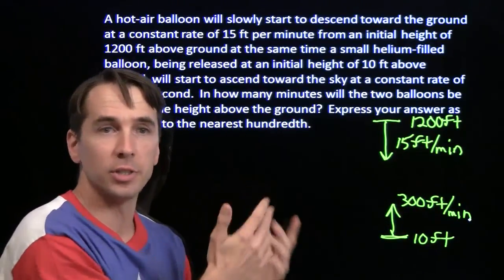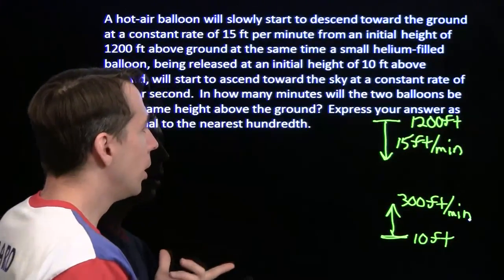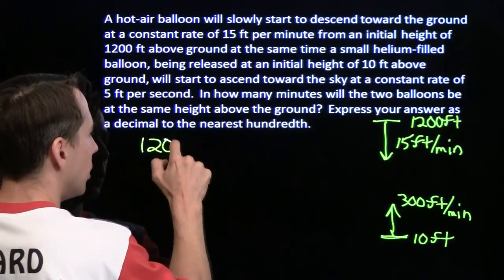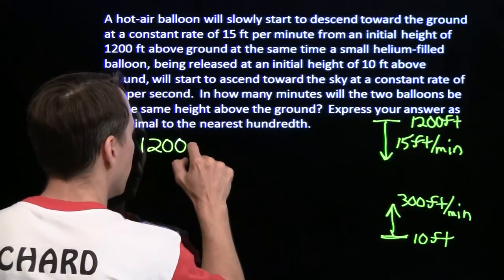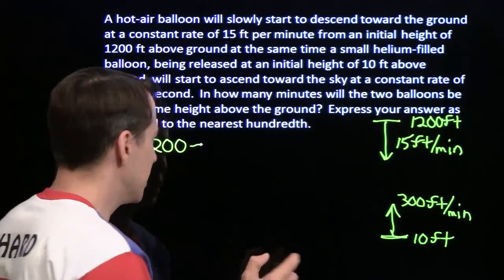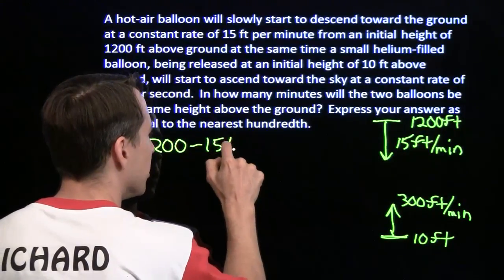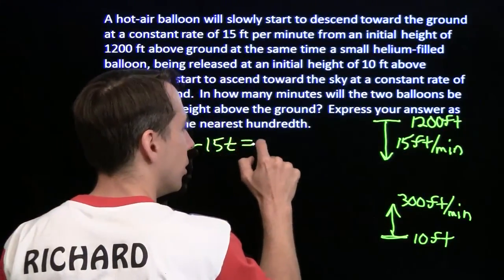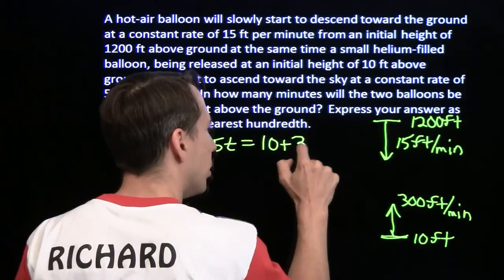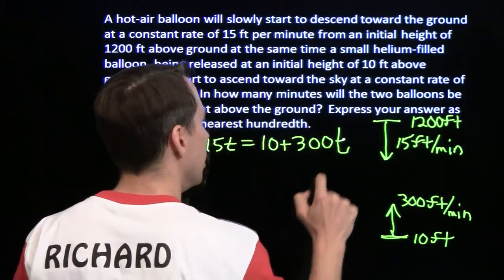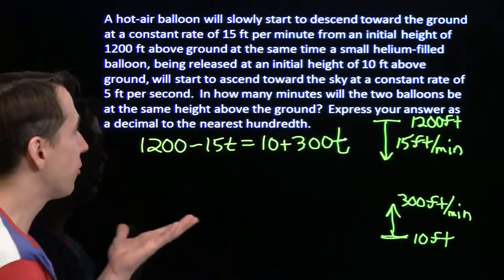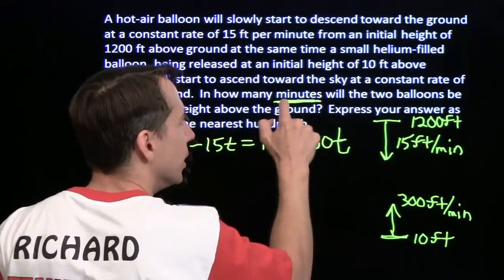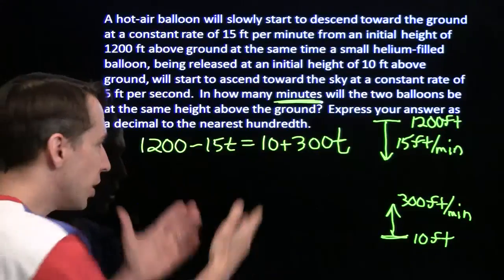We basically want to see when these two altitudes are the same. Well, we can break out some algebra just like we did in the first solution. We can write equations for where this balloon is. It starts at 1,200 and it's going downward at 15 feet per minute. So if we let the amount of time be t, its height will be 1,200 minus 15t. And this little balloon starts at 10 and goes up by 300 feet each minute, so it's going to go up by 300t. Now we have an equation we can solve for t, which is nice because t is what we're looking for. And it's in minutes too. Make sure we have the right units.